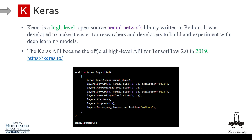The Keras API became the official high-level API for TensorFlow 2.0 in 2019. TensorFlow was already around and you could apply neural networks with it, and then they merged Keras into TensorFlow. Despite this integration, Keras remains a standalone library and you can use it with other deep learning libraries as well. You don't have to use it with TensorFlow, but it's easier to do so — and that's what we're going to do.